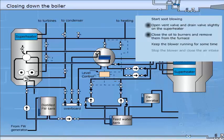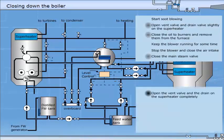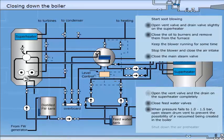Stop the blower and close the air intake to avoid cold air entering the furnace. When the steam pressure is below normal, close the main steam valve. When the steam pressure is 1-2 bar, you can open the vent valve and drain on the superheater completely. When the boiler has cooled down, the feed water valves must be closed. Shut down the air preheater.